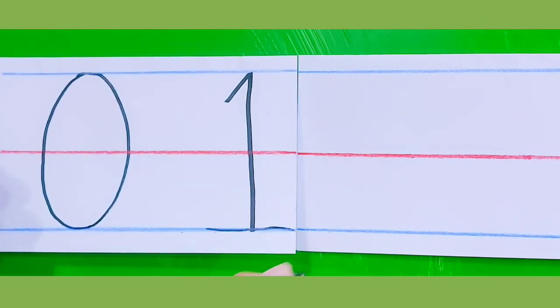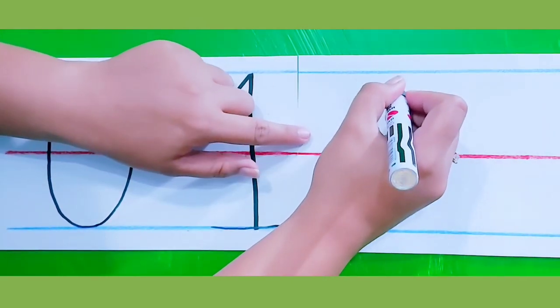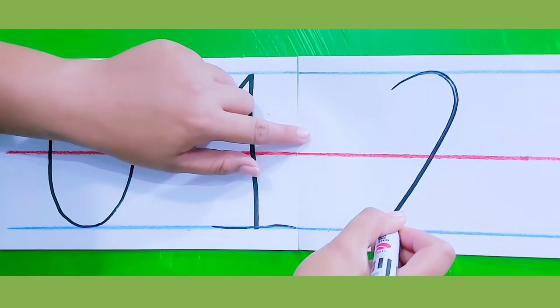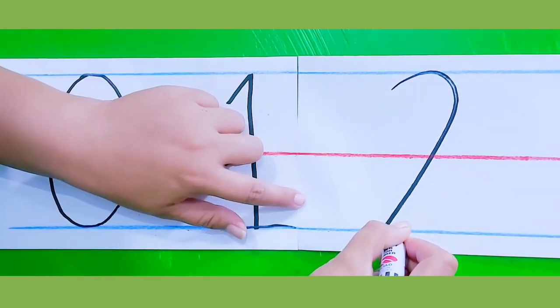For number two, just make a curved line going to the blue line, and left to right.